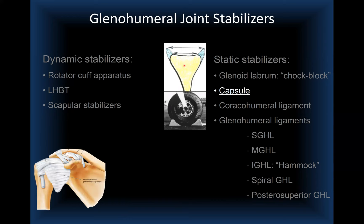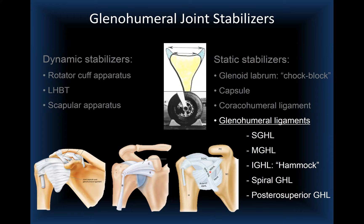The capsule, coracohumeral ligaments, and glenohumeral ligaments all play a significant role in static stabilization of the glenohumeral joint. You can appreciate the normal courses of the superior, middle, and inferior glenohumeral ligaments, and the spiral or oblique course of the fasciculus obliquus.